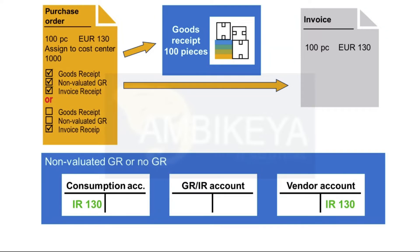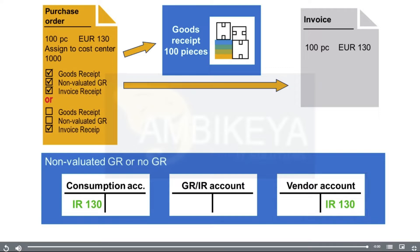During invoice receipt, the consumption account is debited with the invoice amount. The offsetting entry is posted to the vendor account.